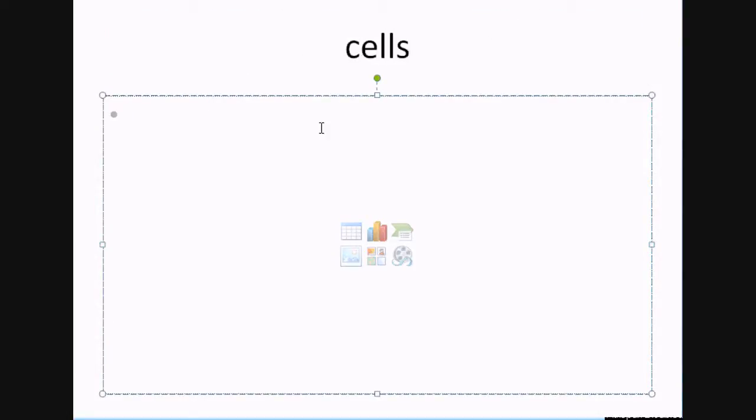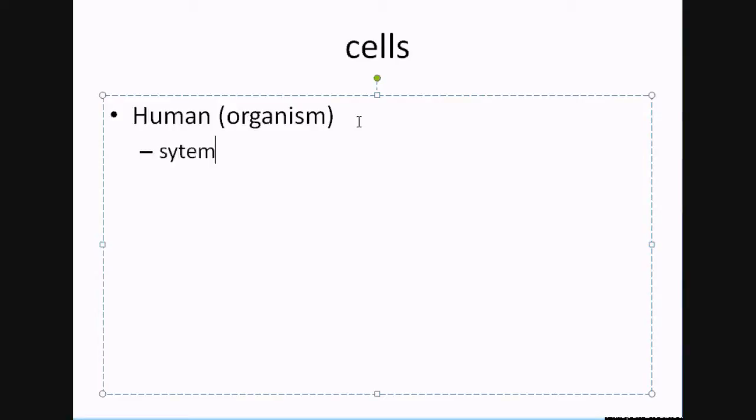Before we even start talking about cells, let's break down the general structure of a human being, or what we eventually become. At the very top, you have the organism, which is us - the human being. Below it, before you became an organism, you're made out of a system, specifically an organ system.